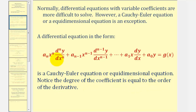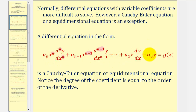Looking at this first term, notice how the coefficient has degree n, and the term also contains the nth derivative. Looking at the second term, notice how the coefficient has degree n minus one, and the term also contains the n minus one-th derivative. This is true for each term in the differential equation, all the way down to a constant times the function y.